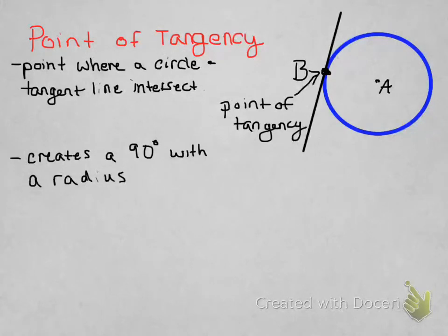The video for today is about the point of tangency. So the point of tangency is the point where a circle and a tangent line intersect. You can see that I've got that pointed out here with the point of tangency.